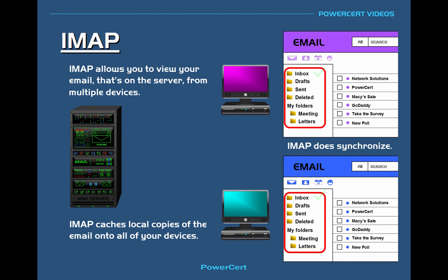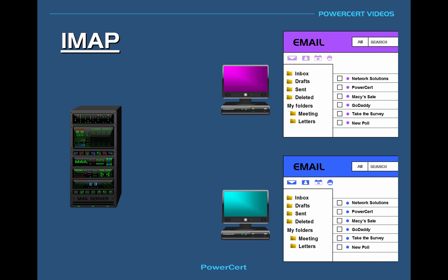IMAP syncs your inbox, sent items, deleted items, drafts, and any custom folders you may have created. So when you view your email on your computer, tablet, or smartphone, your email would be exactly the same because everything is synchronized. In this demonstration, we see that all the email and folders are exactly the same between these two computers. If we delete an email on one computer, the email will be deleted on the mail server and then on the other computer also.